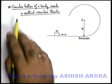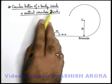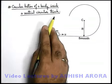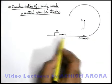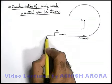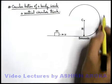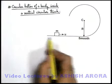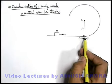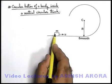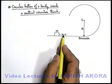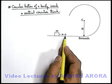Let us analyze the circular motion of a body inside a vertical circular track. Here you can see in this figure, we are given with a vertical circular track which is joined with a smooth horizontal path. A block of mass m is thrown with a speed u on the horizontal path of the track.